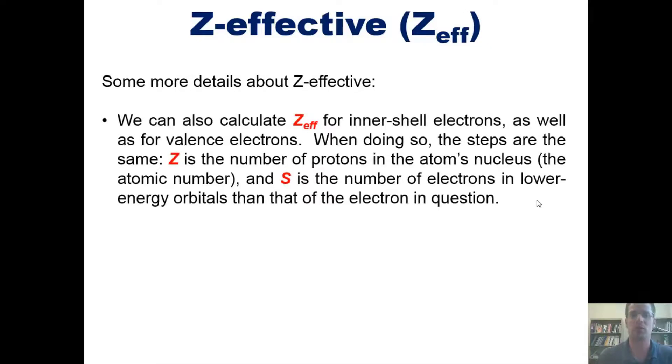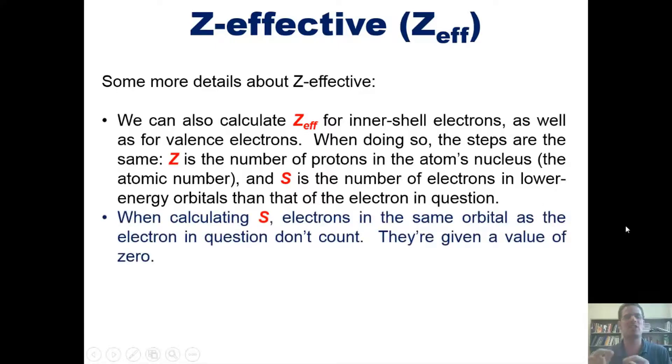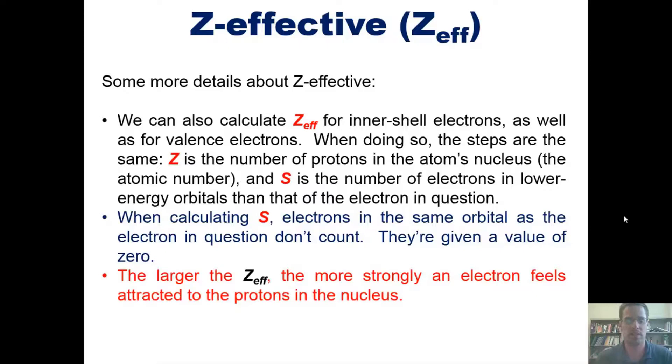We can also calculate Z-effective for inner shell electrons, just like we would for valence electrons. When doing so, the steps are the same. Z is always equal to the number of protons in the atom's nucleus, which is always the particular element's atomic number. And S is the number of electrons in the orbitals that are lower in energy than that of the electron in question. Also, when calculating S, electrons in the same orbital as the electron in question don't count. They're given a value of zero. And lastly, the larger the Z-effective, the more strongly an electron feels attracted to the protons in its nucleus.